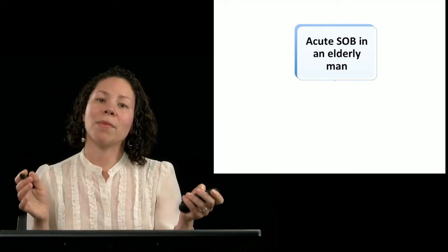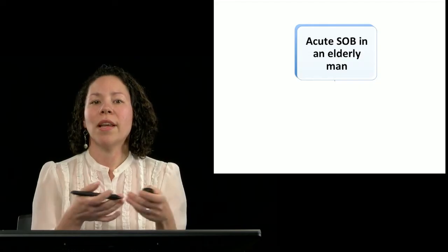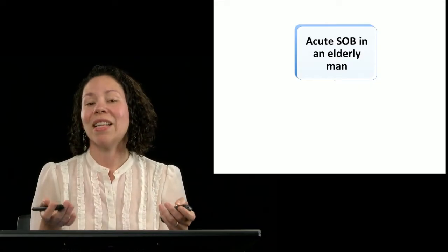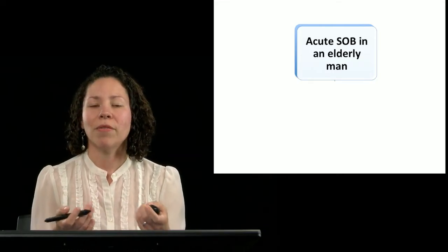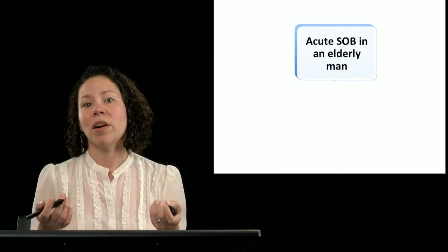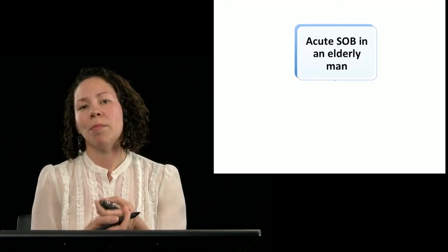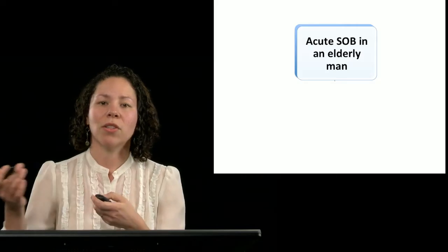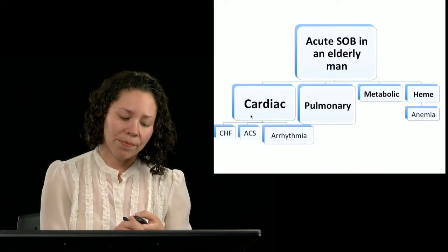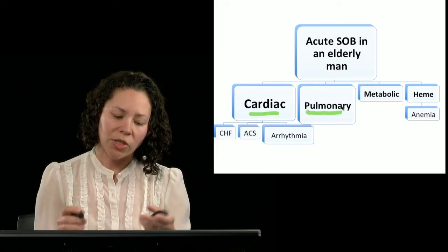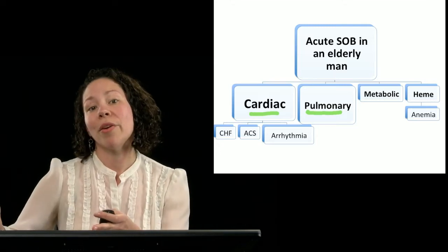And while the buckets may remain the same, what's more common in a given patient population may also be data that you encode in your schema. So for example, acute shortness of breath in an elderly man, for example, an elderly veteran, which are patients I see a lot, they're going to have a very different most likely bucket that they fall into compared to a young woman. So cardiac and pulmonary may become much more important in my patient population. And only if I don't think they fit in there will I then think about my other buckets.